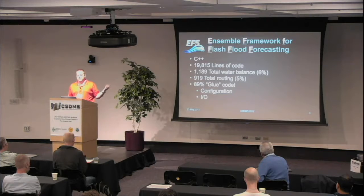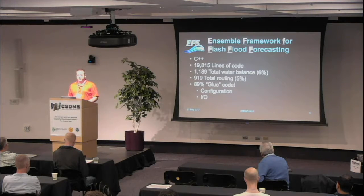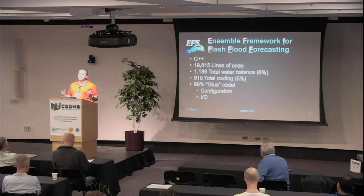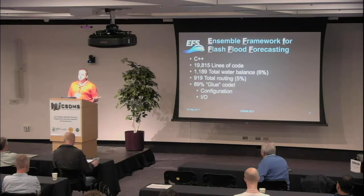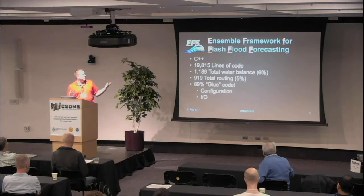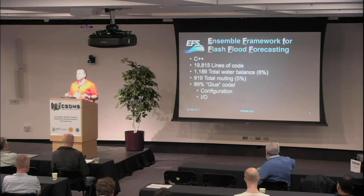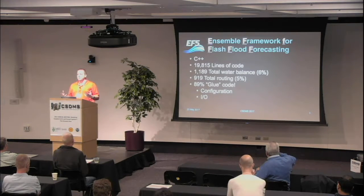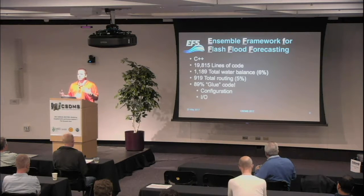This is written in C++. It's about 20,000 lines of code, with about 1,000 lines for the water balance models and another 1,000 lines for the routing models. The rest is what I call glue code — code that makes it all work, reading configuration files, handling all the different options, specifying parameters, inputs, and outputs. The point here is that you should really adopt these frameworks, because you get a lot of code for free, and your models are actually pretty simple compared to the overall framework of reading files, reading data, and doing conversions.